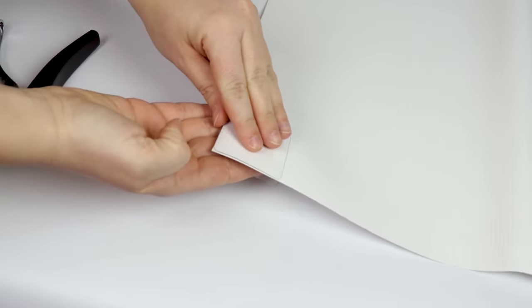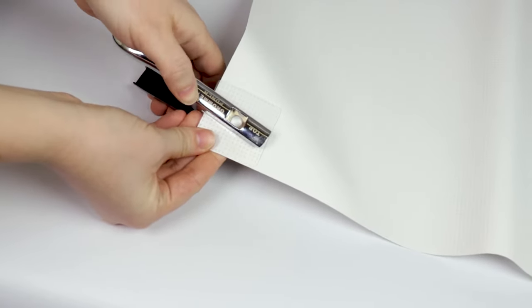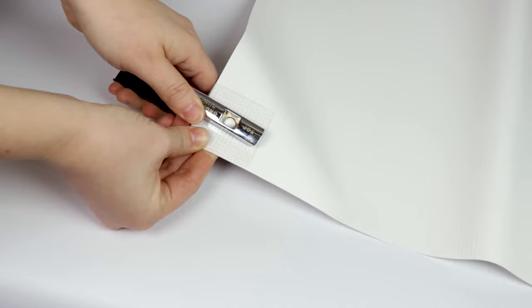Fold the tab then press down for even adhesion. Once the tab is applied, take the easy punch and punch a hole through the vinyl for the rope.